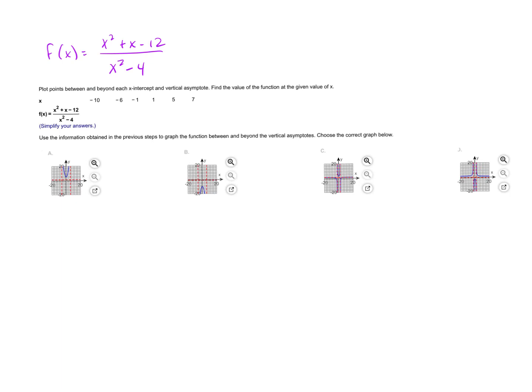The last step before we graph is to fill in some points. We want to plot some points between and beyond each x-intercept and vertical asymptote. The x-intercepts were at negative 4 and 3, and my vertical asymptotes were at x equals negative 2 and 2.